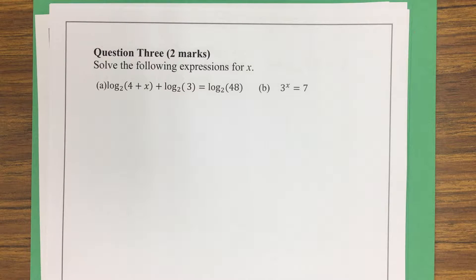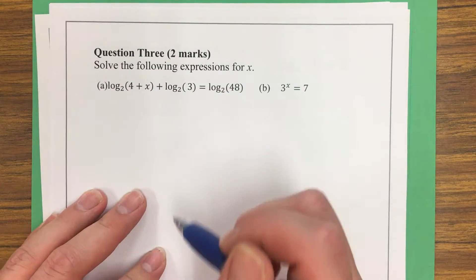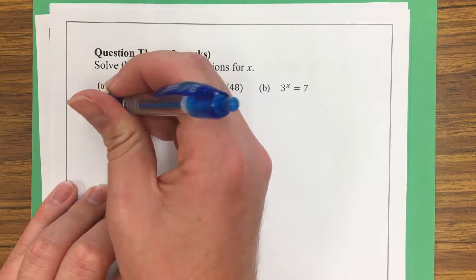Knowing that logarithm laws, when you add two logs, you're multiplying the insides. So, to do A,